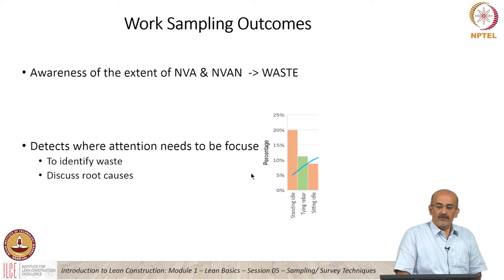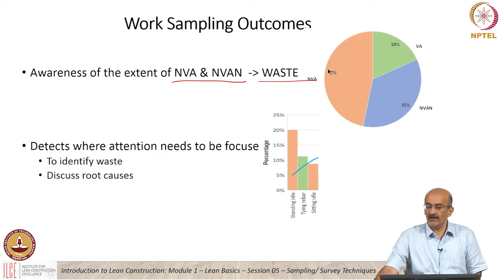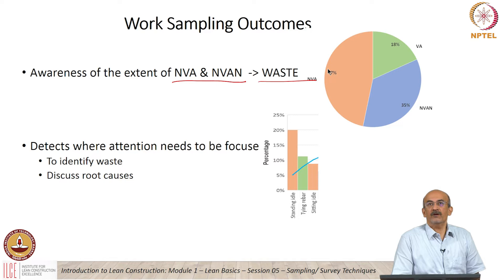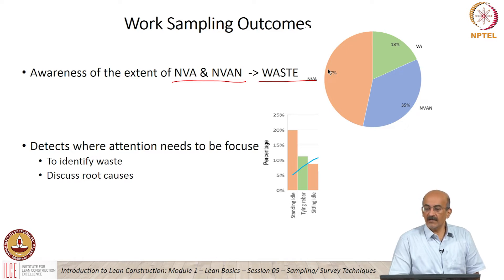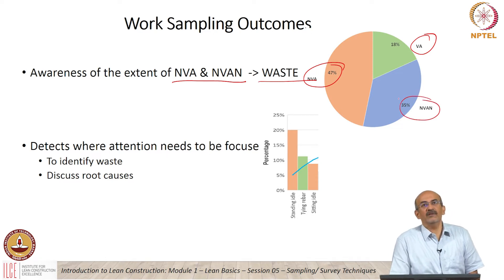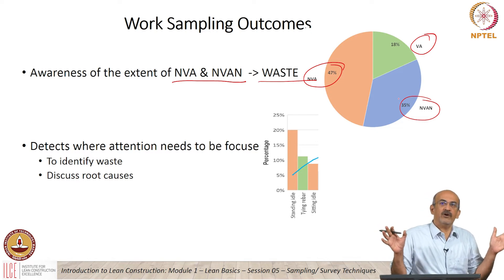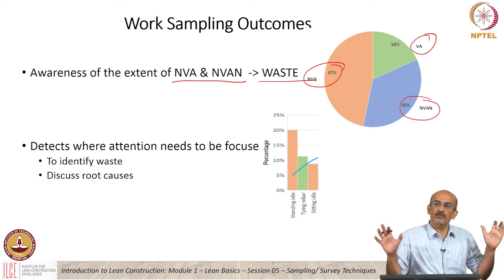When you look at work sampling outcomes, you can have non-value-added and non-value-added but necessary, and this indicates waste. Here is an example of a work sampling output. Value added seems to be very, very little — non-value-added is very high, and non-value-added necessary is also high. So there is something to wonder about here. From a very broad perspective, the value-added proportion is not good.